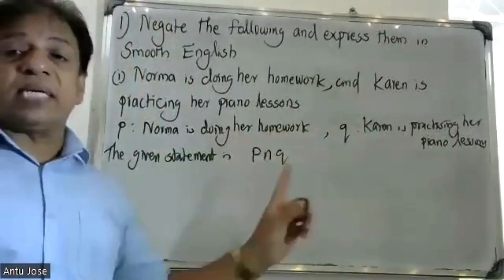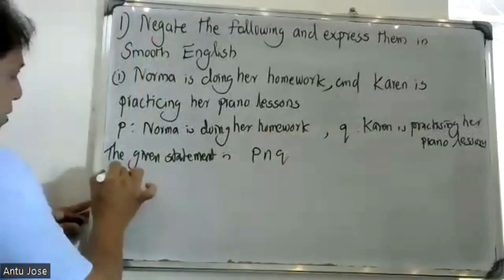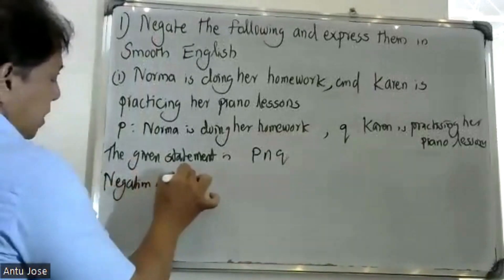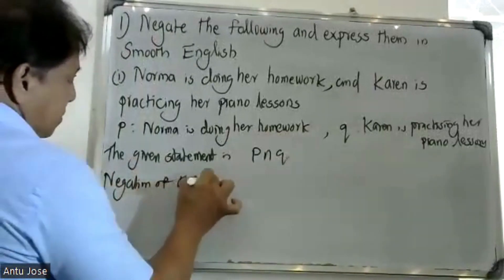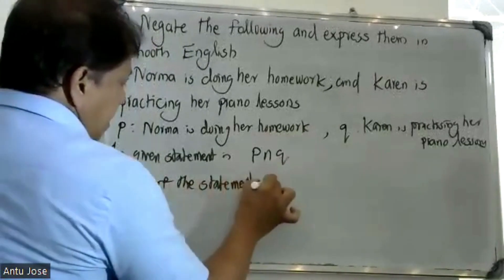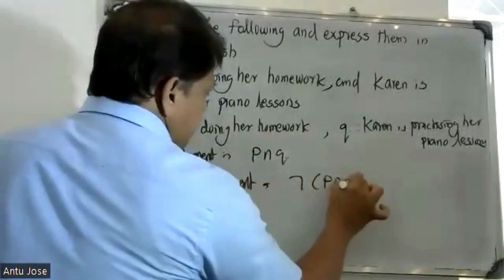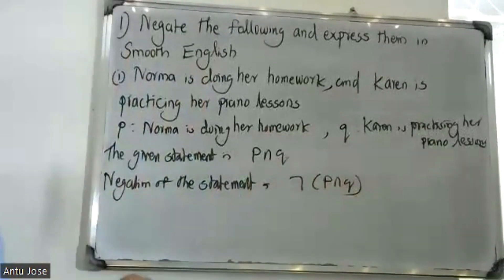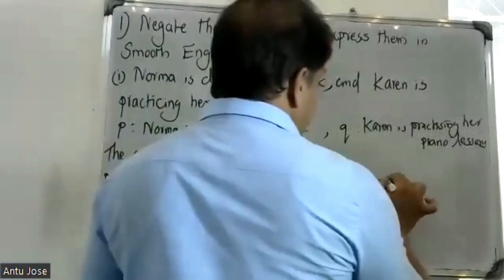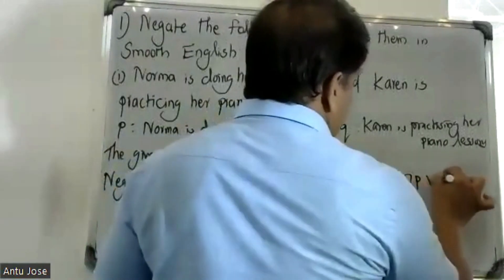If V and Q, then negation. The negation of the statement is: negation of P and Q. By using De Morgan's law, this becomes negation P or negation Q.